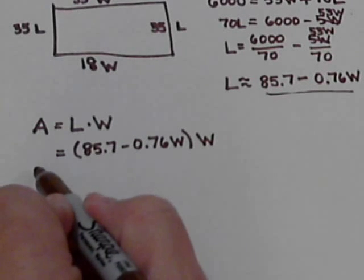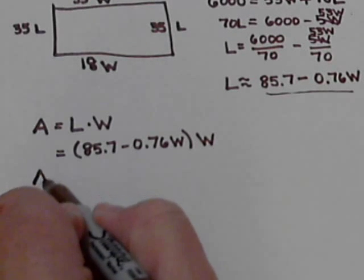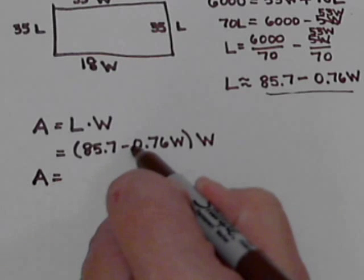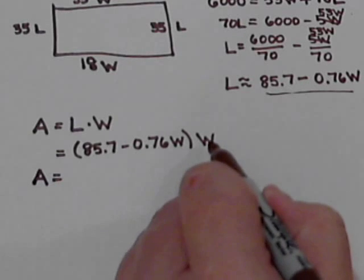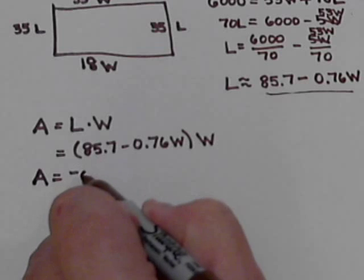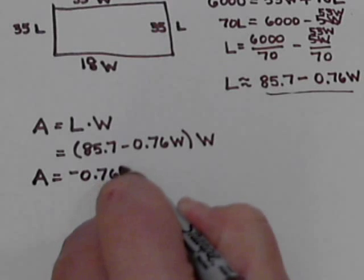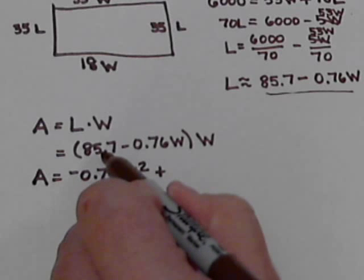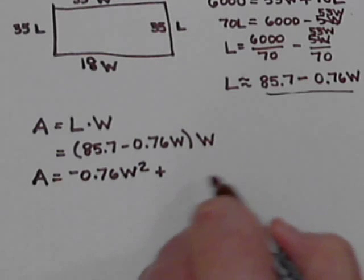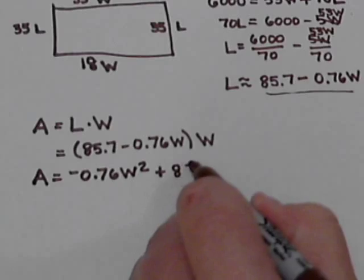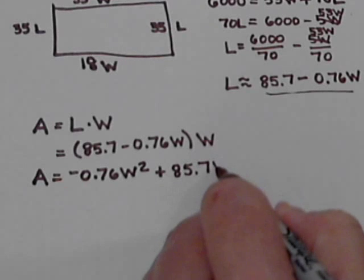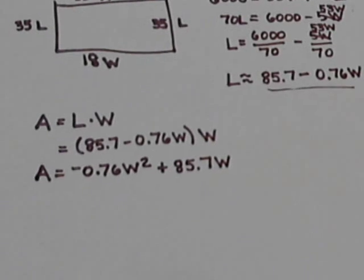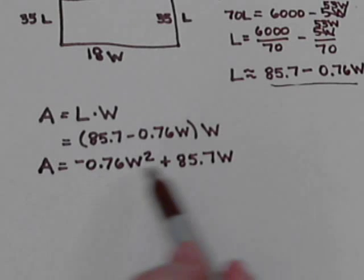And if we work this out, we're going to have our area equation being negative $0.76W times W. So negative 0.76W squared plus 85.7 times the W. So this is our area equation.